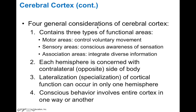There are four general considerations of the cortex. First, we have three types of functional areas: motor, sensory, and association areas. Second, each hemisphere is concerned with the opposite side of the body — motor areas controlling the left side of your body involve neurons on the right cerebral hemisphere. Third, there's lateralization, a specialization of cortical function to different hemispheres — the basis for right brain versus left brain. Fourth, conscious behavior involves the entire cortex in one way or another.